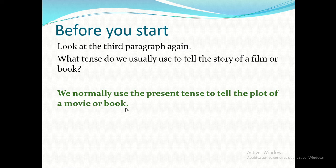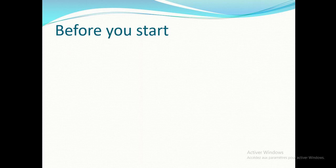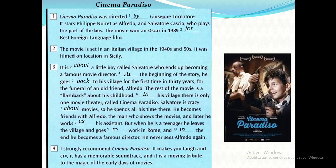The answer: we normally use the present tense to tell the plot of a movie or a book. We use the present simple all the time. For example: 'is,' 'ends,' 'goes,' etc.